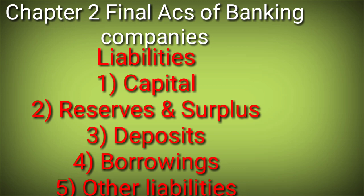Other Liabilities (Schedule 5) includes creditors, sundry provisions, outstanding expenses, rebate on bills discounted, and provision for tax. Overall, Schedules 1 and 2 are easy as they are similar to standard formats. Schedule 3 - Deposits - is the new banking-specific format, covering current accounts, fixed deposits, recurring deposits, and saving accounts. Borrowings and Other Liabilities cover the remaining points.